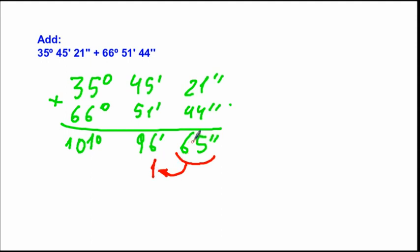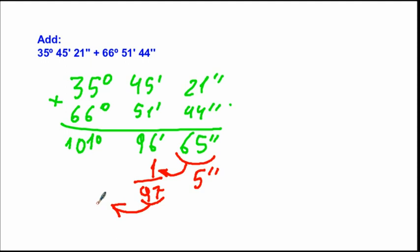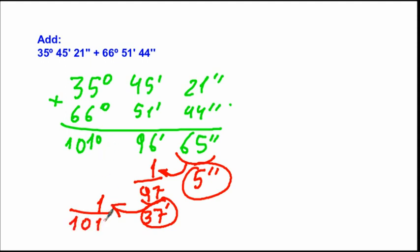Since 65 seconds equals 1 minute and 5 seconds, we carry 1 minute and are left with 5 seconds. Adding to the minutes gives 97 minutes. Similarly, 97 minutes is more than 60, so we convert: 97 minutes equals 1 degree and 37 minutes. Adding to the degrees gives the final result: 101 degrees, 37 minutes, and 5 seconds.